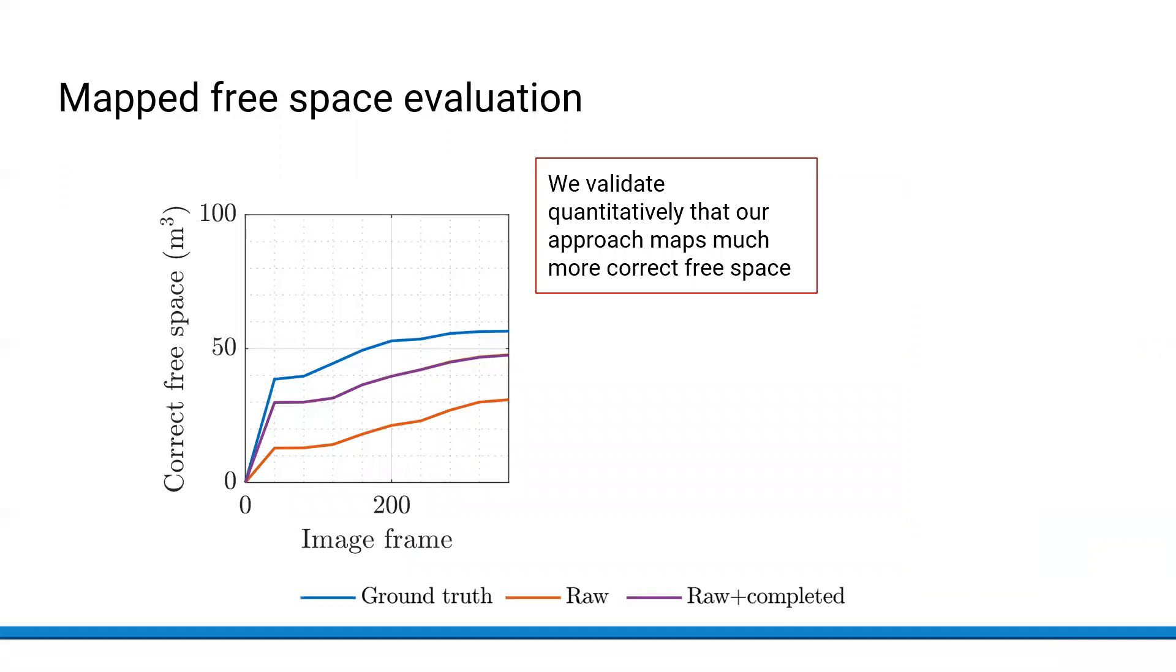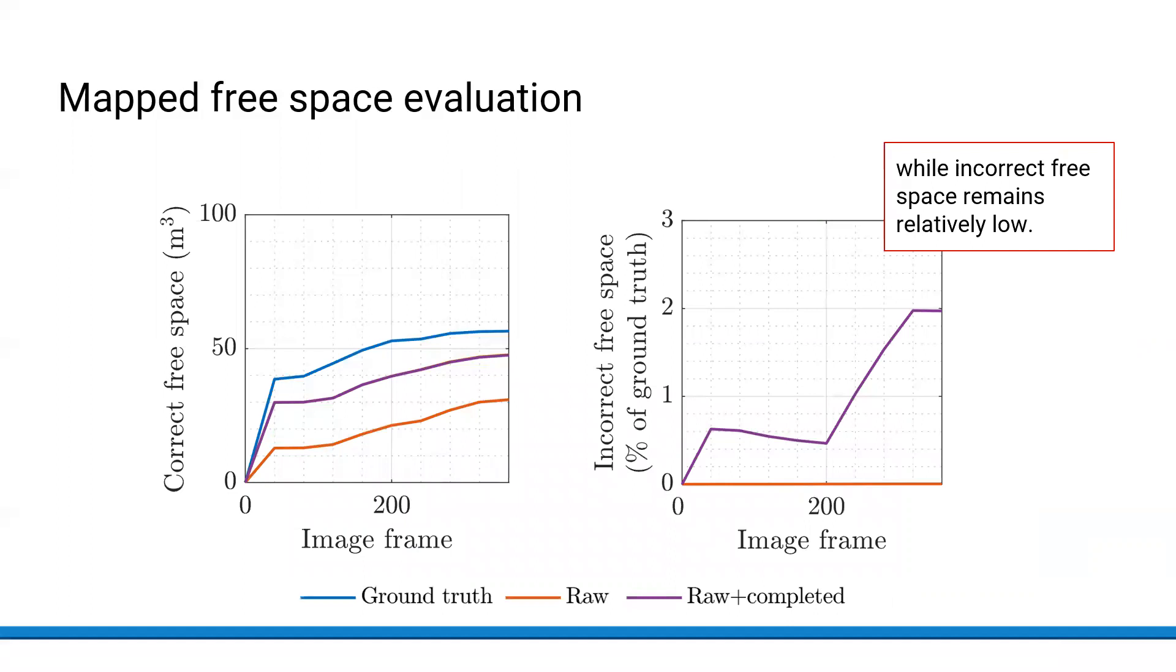We also validate this quantitatively by measuring the free space volume in the scene. We find that our approach maps much more correct free space while incorrect free space from inaccurate depth completion remains relatively low. In other words, we uncover significantly more space suitable for robotic navigation without compromising on safety.